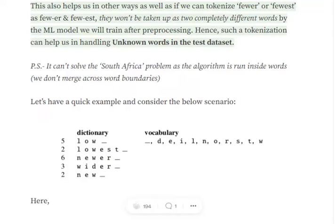It's a special character that we've added on our end. The next part is to split out each and every character from the dataset. So we've got our vocabulary now: underscore, d, e, i, l, n, o, r, s, t, w.